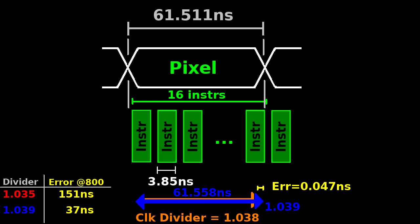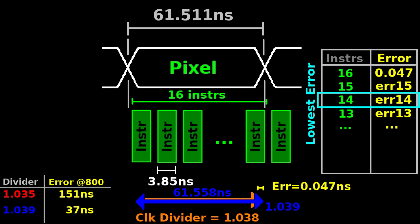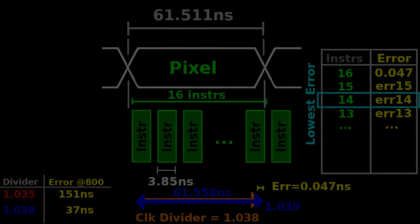If we can't get a good clock divider, we can also try loops with different latencies — like 15, 14, 13 and so on — and look for the one with the lowest error. This is exactly what we do in the MC Blaster firmware, to minimize the clock divider error and eliminate the sampling artifacts.